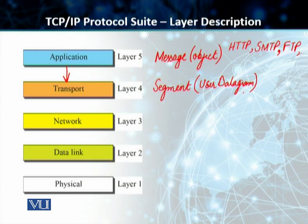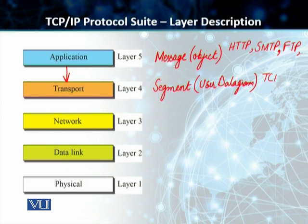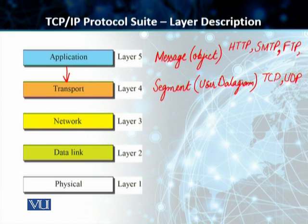Students, the transport layer is basically responsible for giving services to the application layer. It gets a message from the application program running on the source host and delivers it to the corresponding application program on the destination host. Two examples of transport protocols are TCP — the transmission control protocol — and UDP — the user datagram protocol. One is connection-oriented, the other is connectionless, and we'll go into the details in the next lectures.